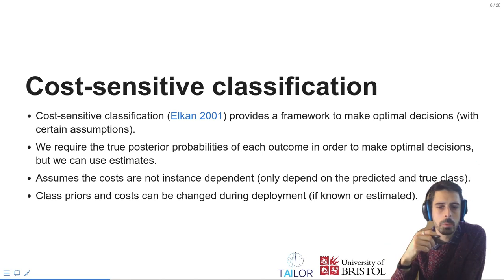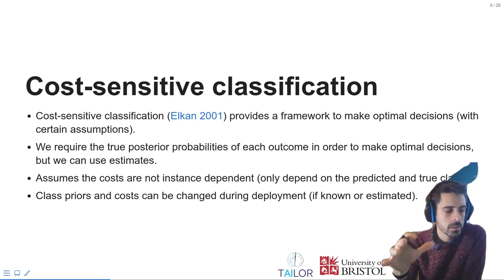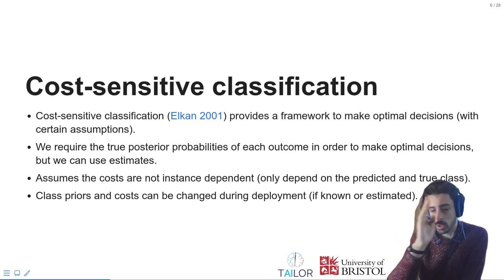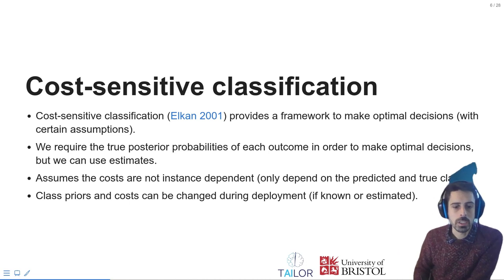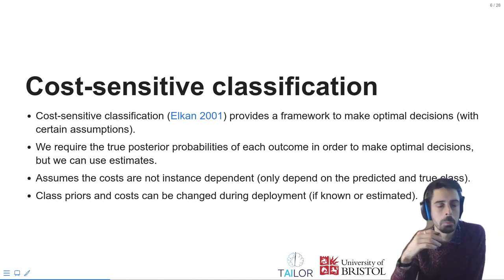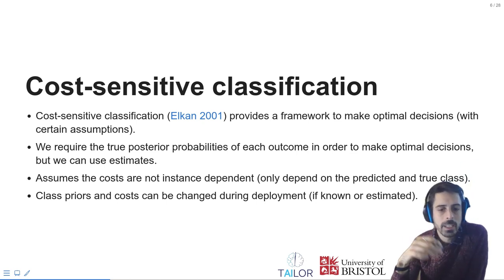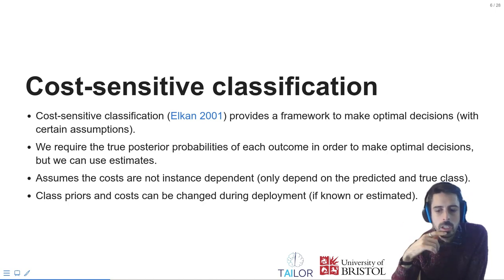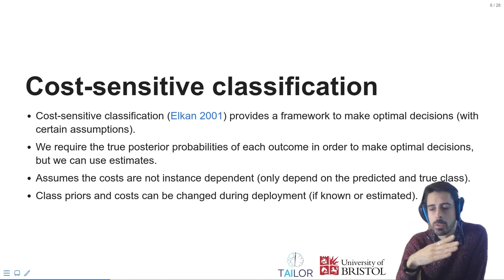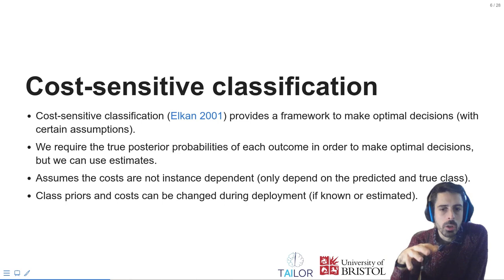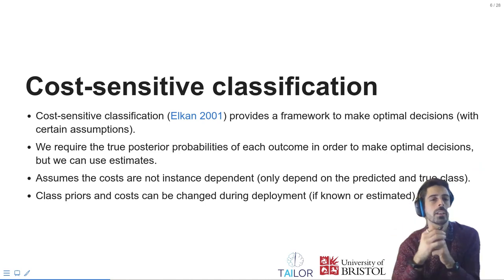This may be useful if, for example, during training we are asked by a company to create a model and they are not sure what the consequences or cost of making certain wrong predictions are, but we can still provide a model. Then during deployment the costs can change over time and we can adjust the thresholds or the optimal decision given those changes. Similarly for the class priors — if during training we have uniform priors for every class but during deployment we know there is an abundance of a particular class.